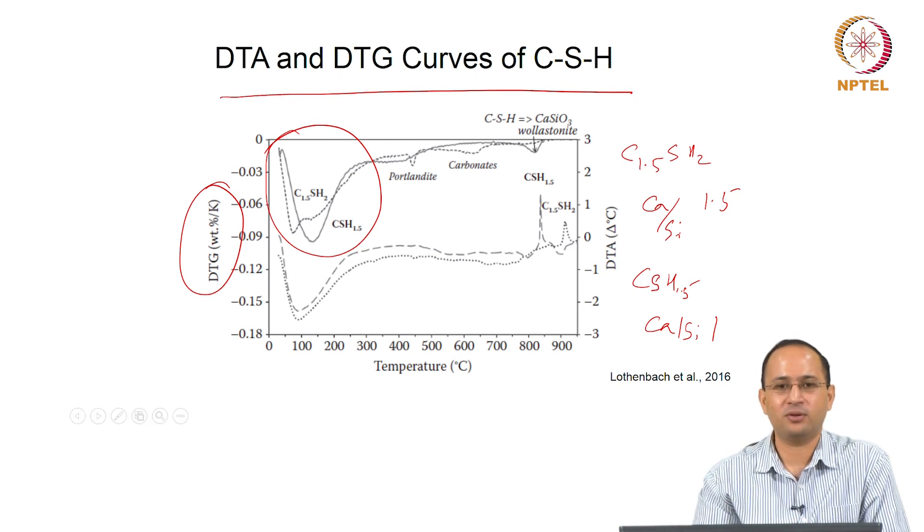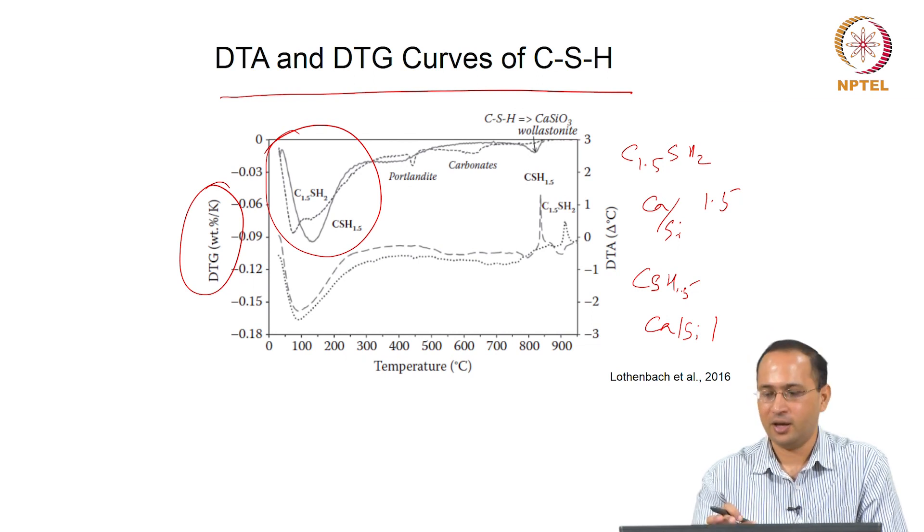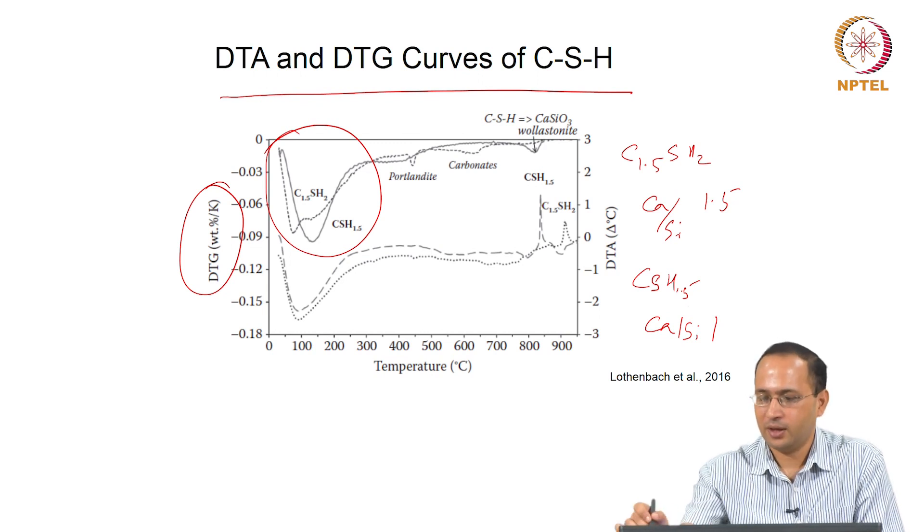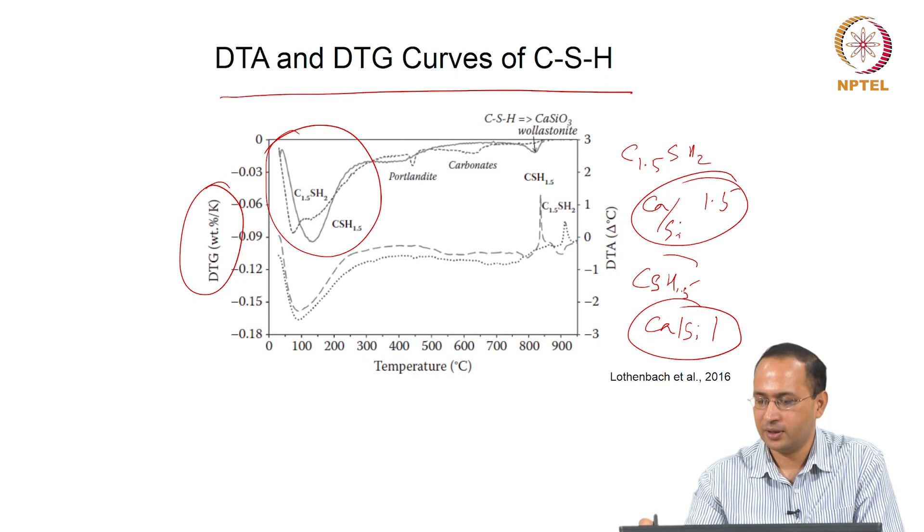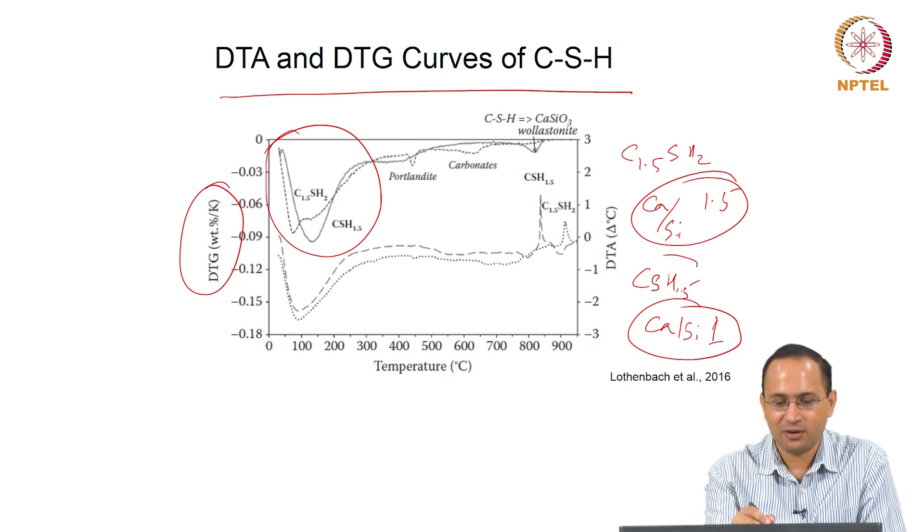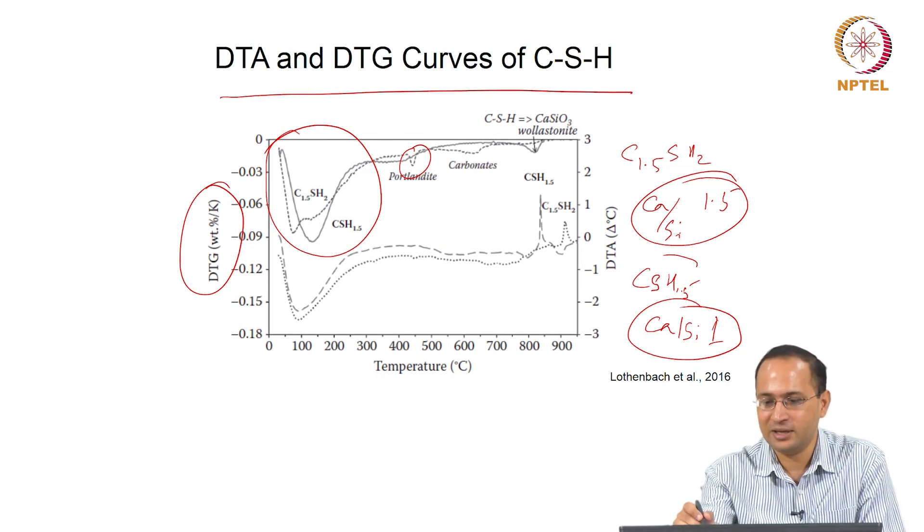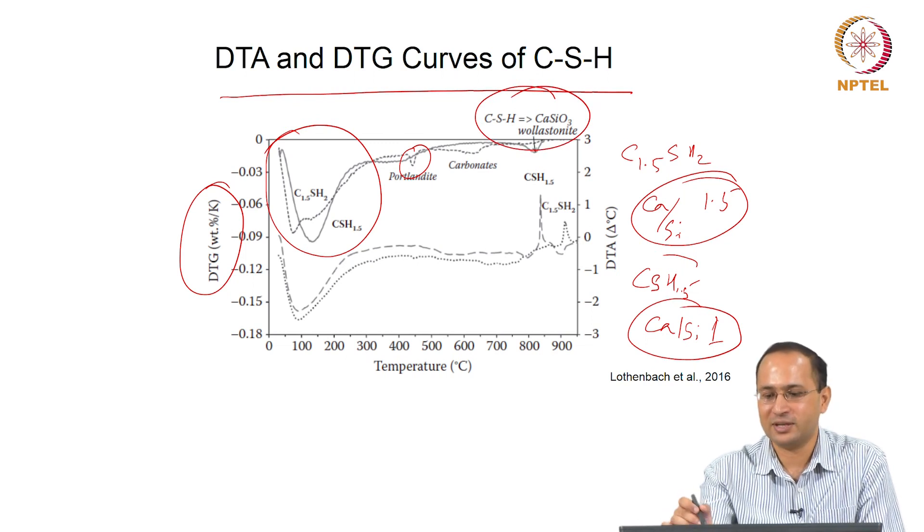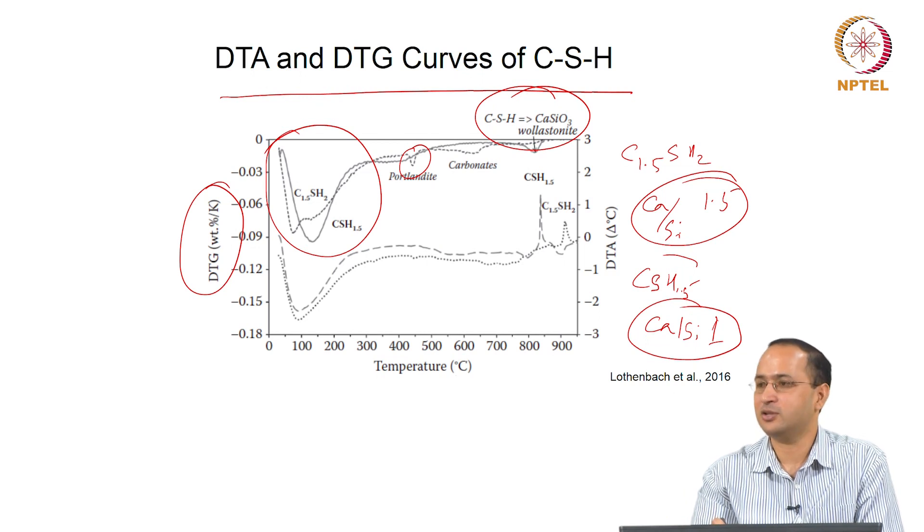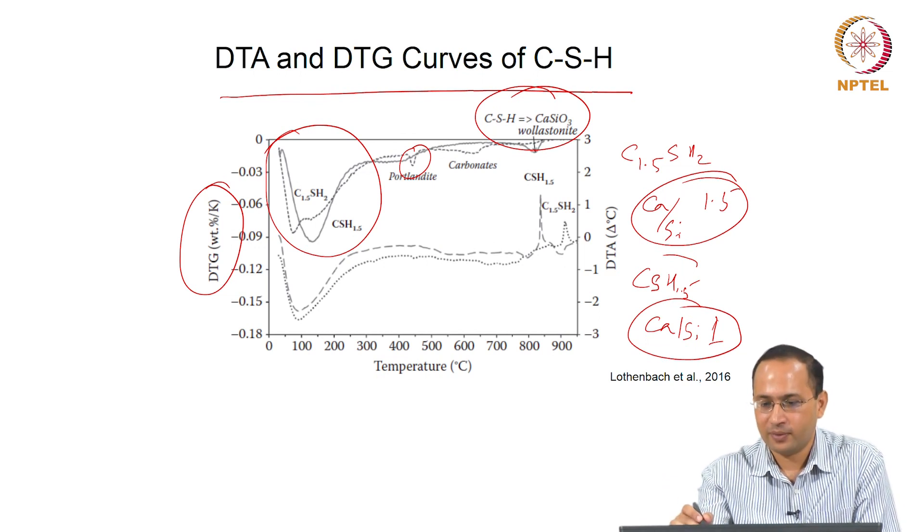And CSH1.5 corresponds to calcium to silica ratio of 1. Commonly we have 1.6, 1.7 calcium to silica ratio in CSH present in Portland cement paste. In CSH with higher calcium to silicon ratio, you see some portlandite also. At around 800-900 degrees C, you see transformation. Your CSH transforms to crystalline form of wollastonite, CaSiO3. That transformation you can capture clearly.